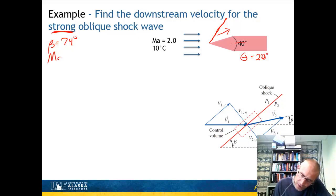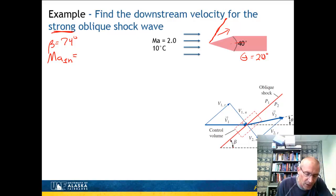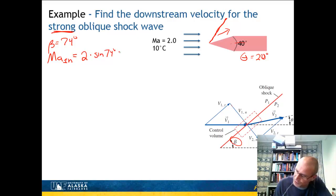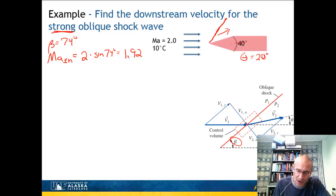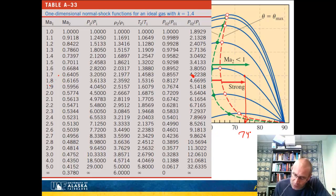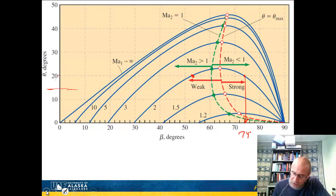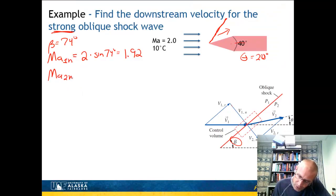Now find the normal component of the upstream Mach number: MA1-normal = 2 × sin(74°) = 1.92. Go to Table A33 with an upstream Mach number of 1.92 — the downstream normal Mach number is approximately 0.59. Now convert back to the actual downstream Mach number: MA2 = 0.59 / sin(74° − 20°) = 0.59 / sin(54°) ≈ 0.73. This is subsonic.